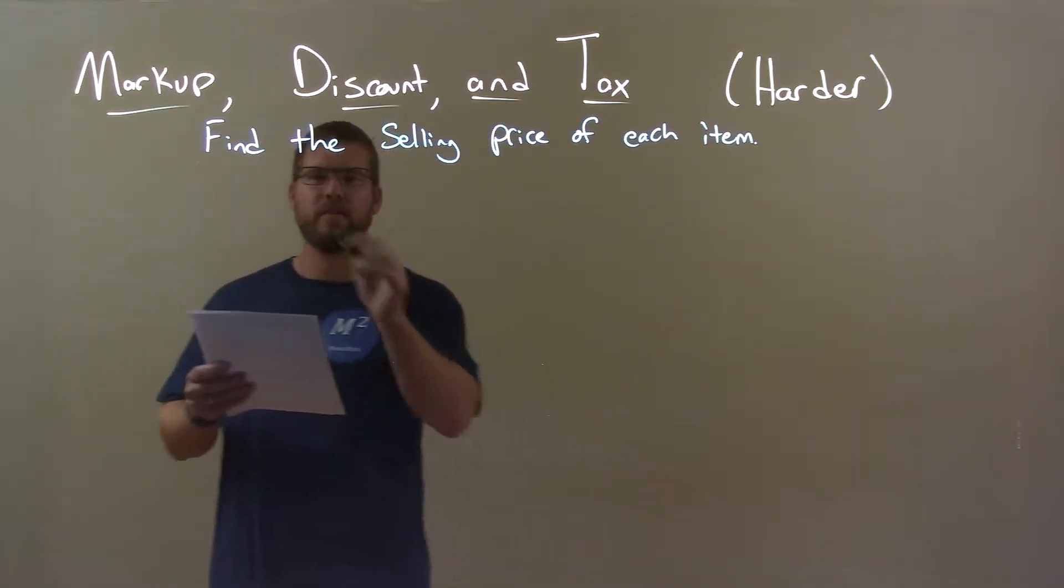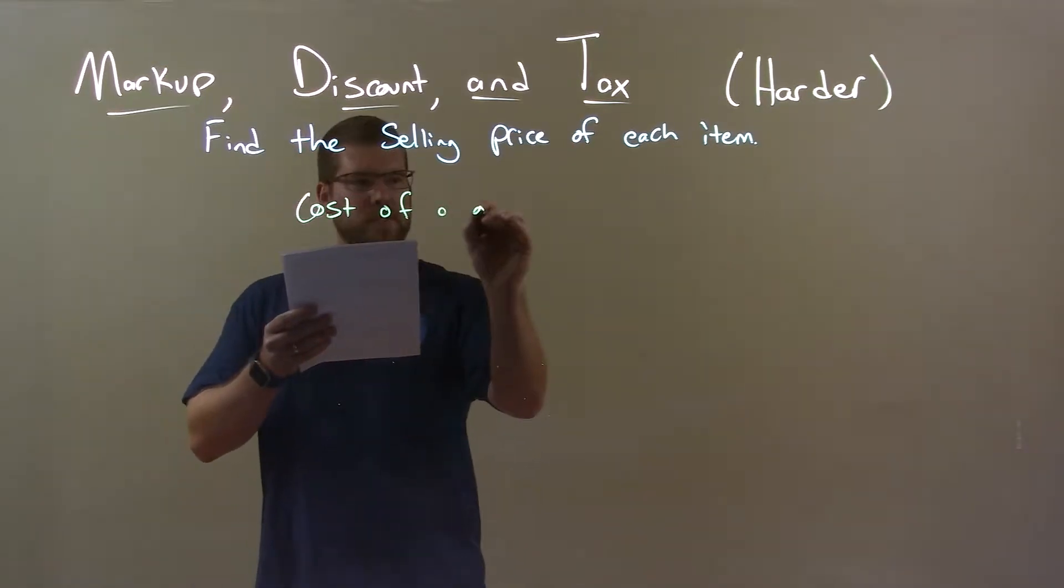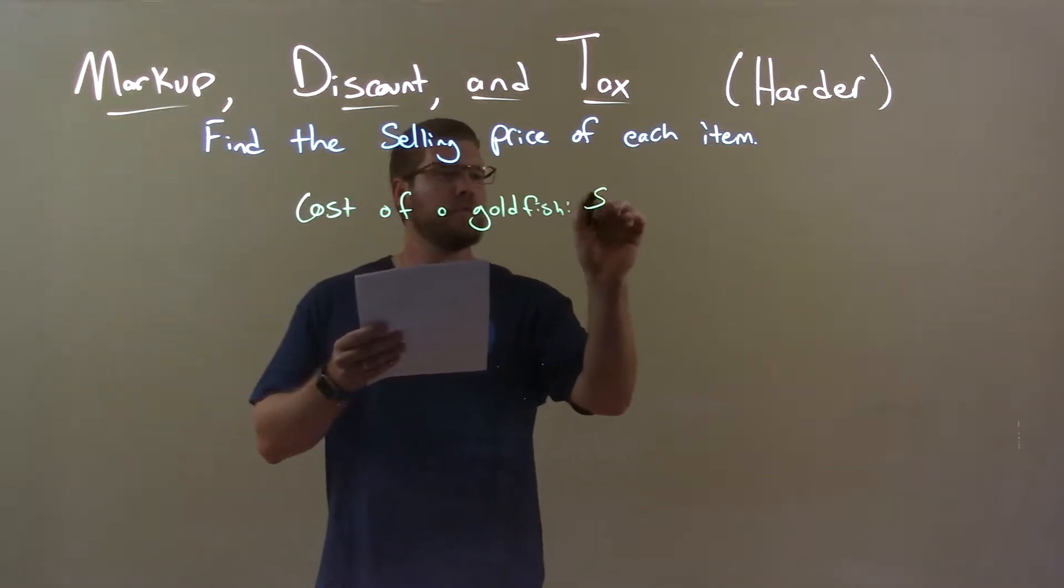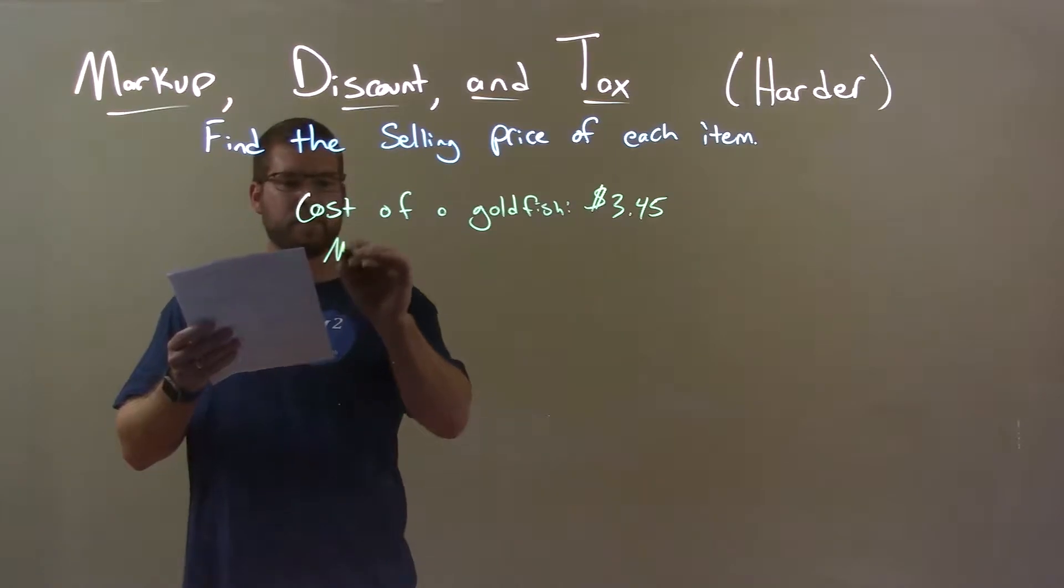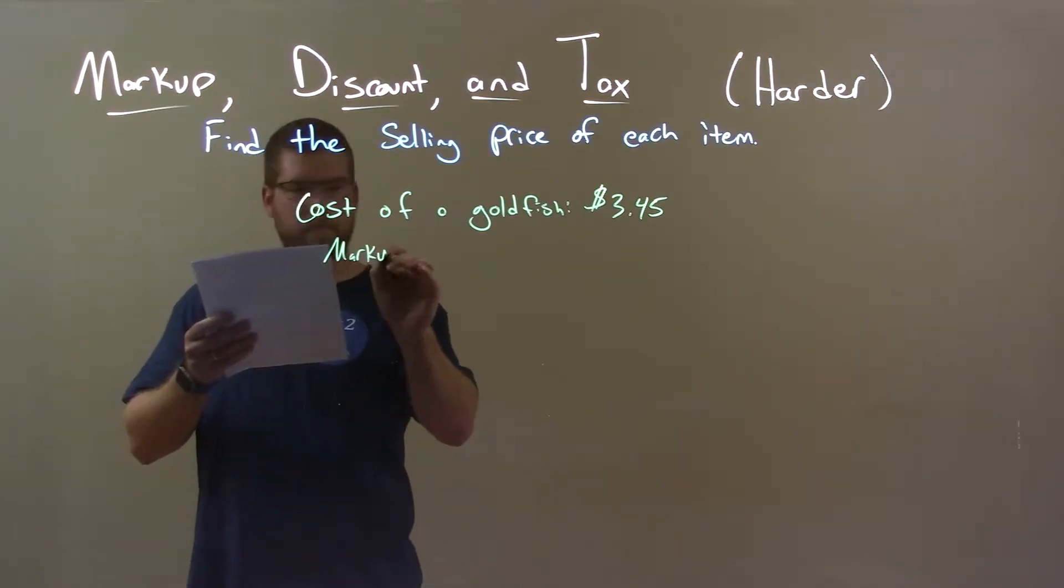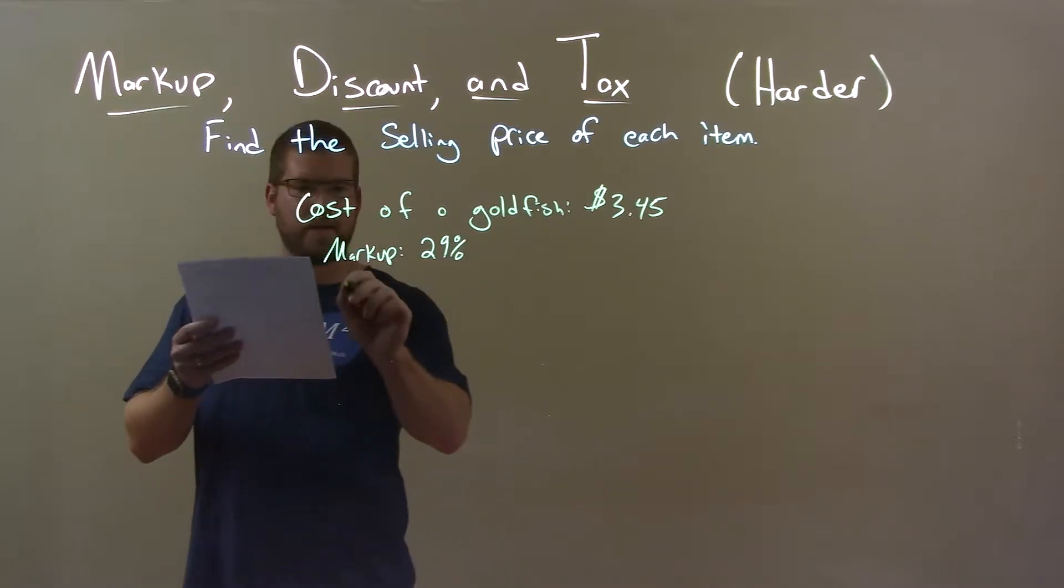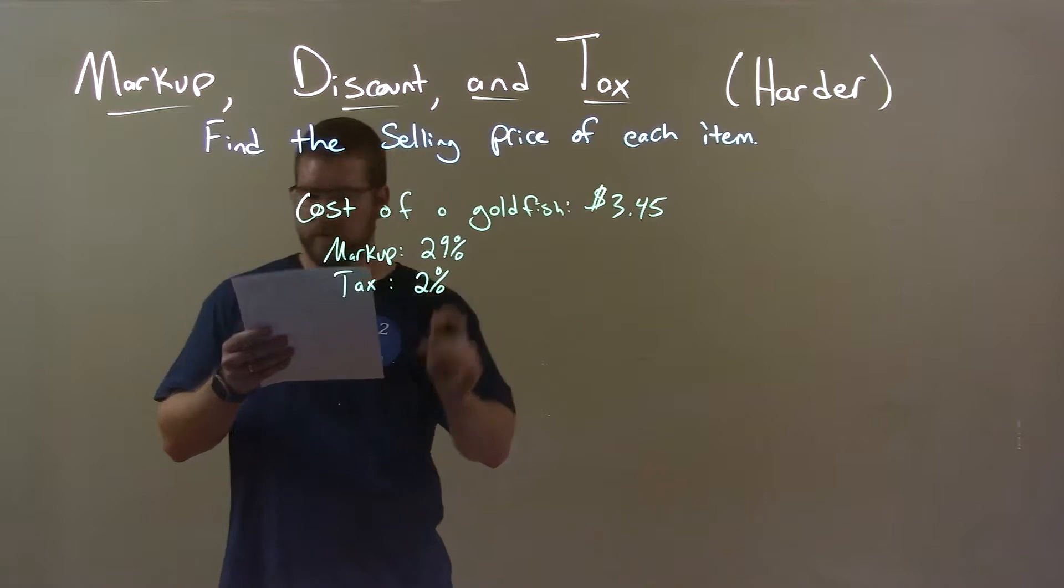So if I was given this item, the cost of a goldfish is $3.45. Its markup is 29%, and its tax is 2%.